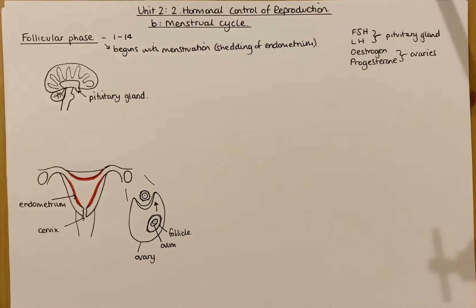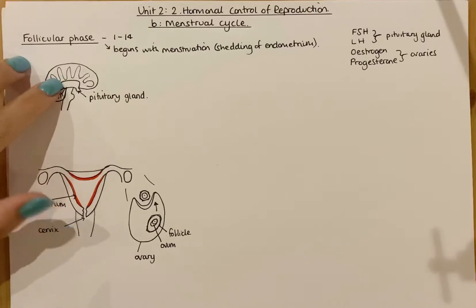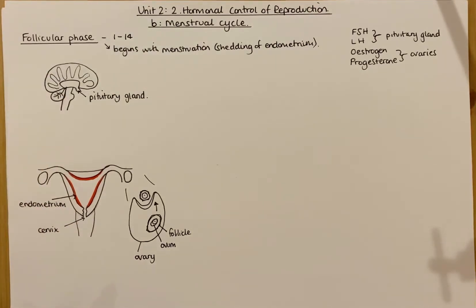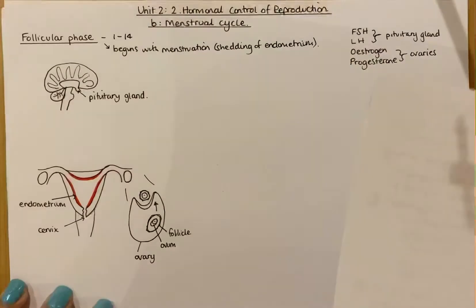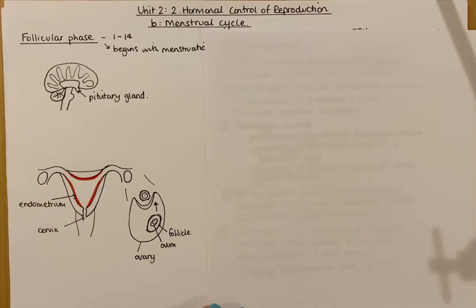If you haven't watched the first video about the overview of the female reproductive system and the second video about the overview of hormonal control of the menstrual cycle, go back and have a look at those. The structure above the pituitary gland is the hypothalamus, which produces a releaser hormone that triggers the pituitary gland to produce particular hormones. The hormones the pituitary gland produces are FSH and LH.